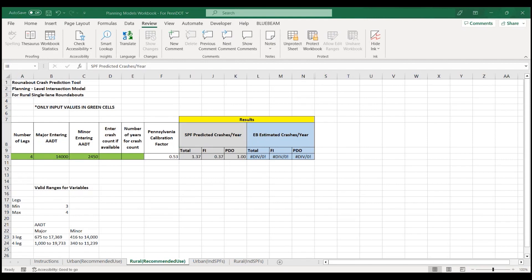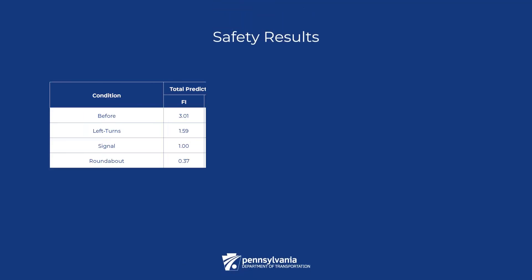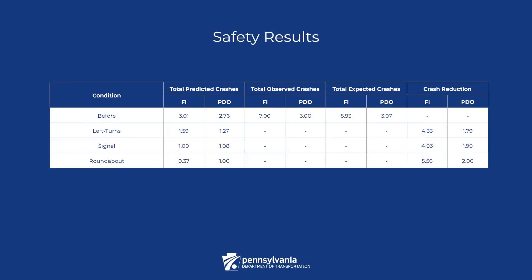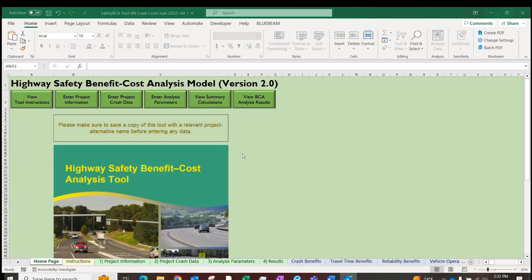Later, we will do a benefit-cost analysis using the SPF predicted crash data. The results of the existing and future conditions analysis are summarized in this table. We determine crash reductions by subtracting the predicted number of crashes for each alternative from the expected number of crashes for the existing condition.